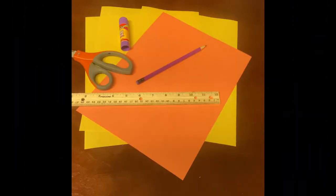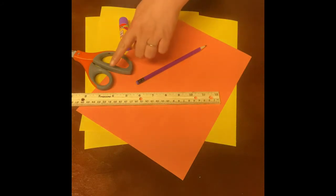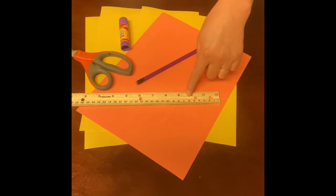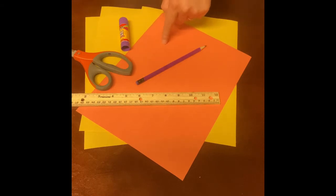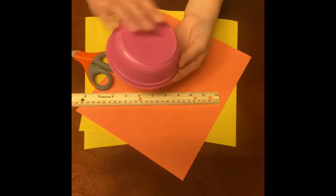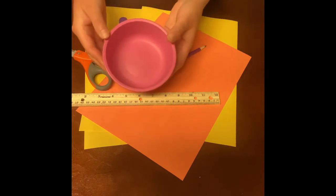Alright friends, to make our thankful craft, we're going to need a pair of scissors, a pencil, a ruler, some glue stick, and one, two, three, four sheets of construction paper. And optional, a bowl, if you have one.